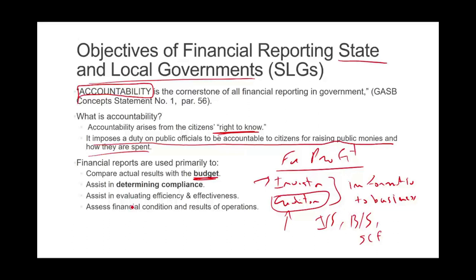The financial reporting will also assist in determining compliance. We want evidence from the financial report that the government did comply with laws, regulations, and any restrictions. For example, if a bank lends money, they use the financial report to see if the government is in compliance — so they can renew the loan or reduce the interest rate. If the federal government gave money for housing, they want to see that the money was spent on housing. The financial report shows whether compliance was achieved.